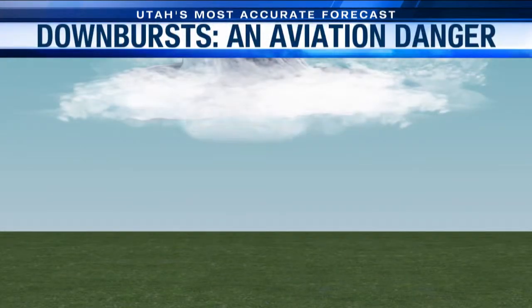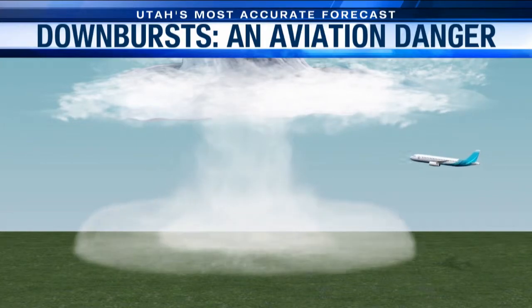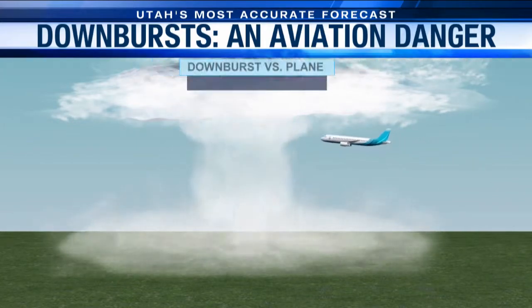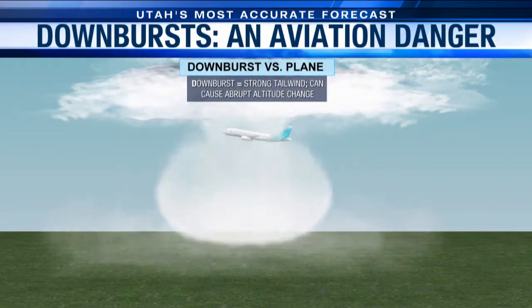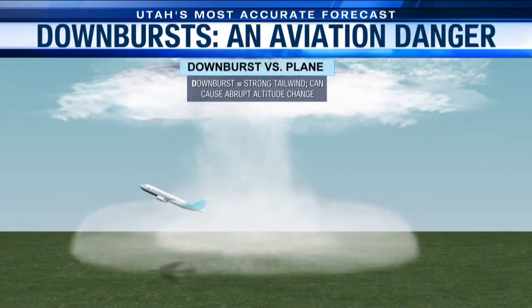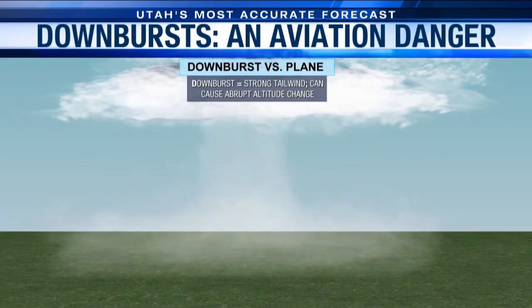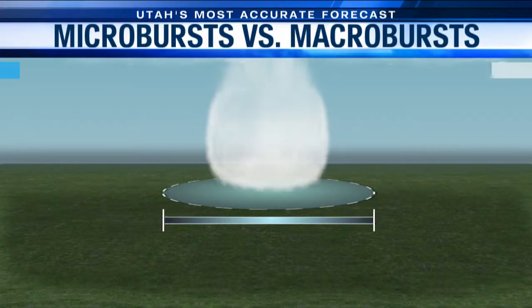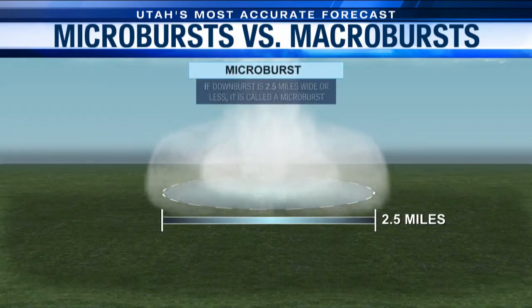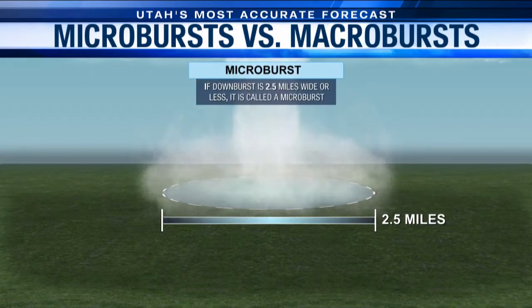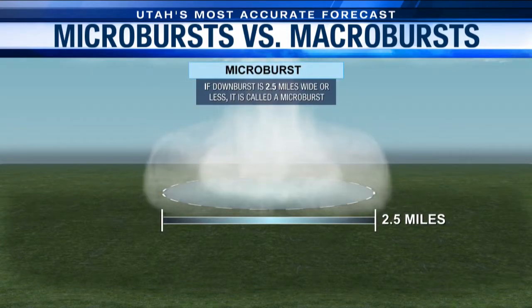Downbursts can occur when that surge of cold air hits the ground. You've probably felt a downburst of air during a thunderstorm. Sometimes downbursts are so powerful they can kill. These winds have crashed planes, and many times they cause an abrupt change in altitude. There are two types of downdrafts: macro and microbursts.